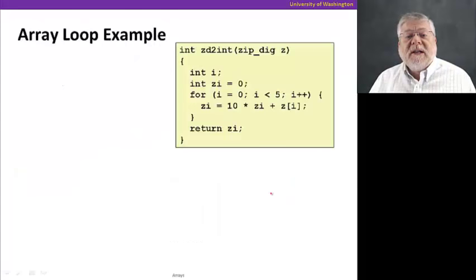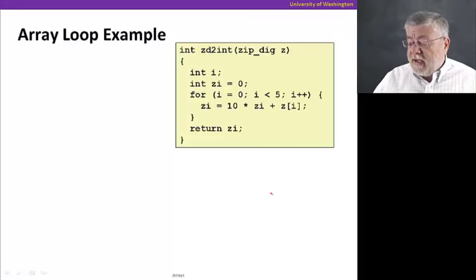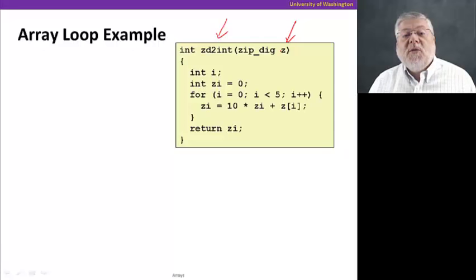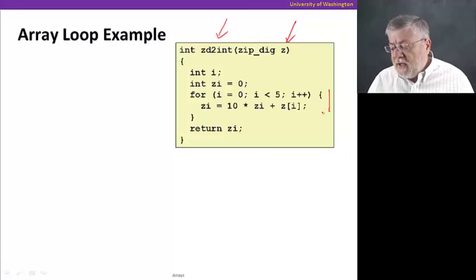Let's go on to look at a slightly more complex example. In this case, we have a function ZD to int, which takes an array of type zip digits and turns it into an integer. For example, the UW array that had 98195 as the five digits would now, if given as an argument to this function, would return the integer 98195. How do we do that? It's a simple loop that goes and looks at each digit, multiplying it by ten each time so that we use the digits as ten thousands column, thousands column, hundreds column, tens column, and so on.